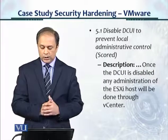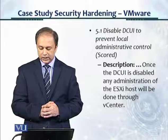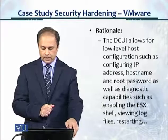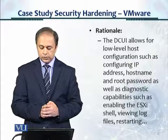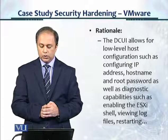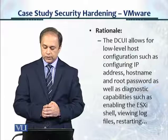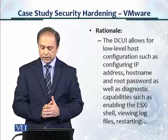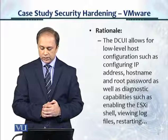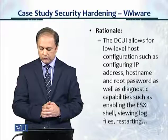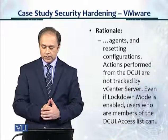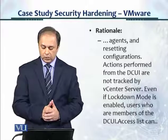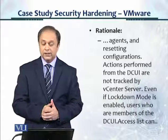Once the DC UI is disabled, any administration of the ESXi host will be done through vCenter. The DC UI allows for low level host configuration, such as configuring IP address, host name and root password, as well as diagnostic capabilities such as enabling ESXi shell, viewing log files, restarting agents and resetting configurations. Actions performed from the DC UI are not tracked by vCenter server.